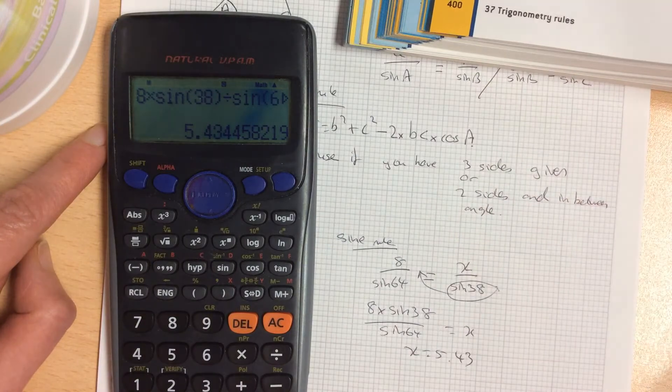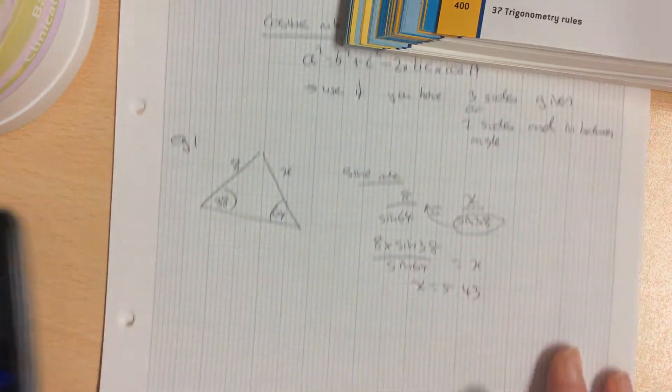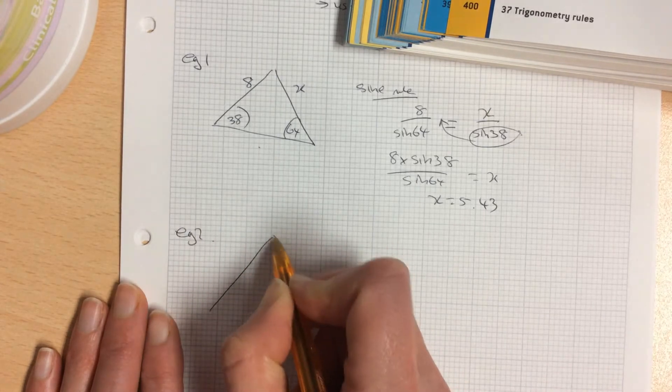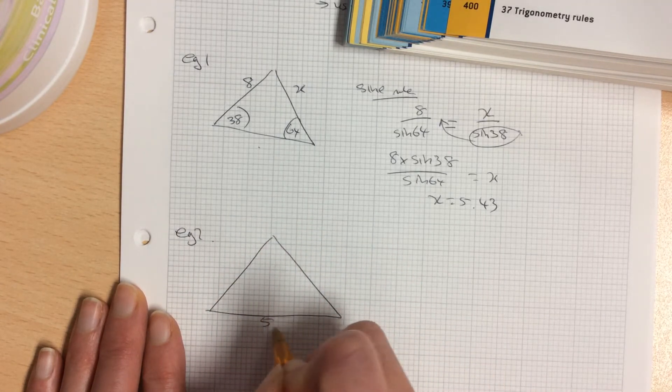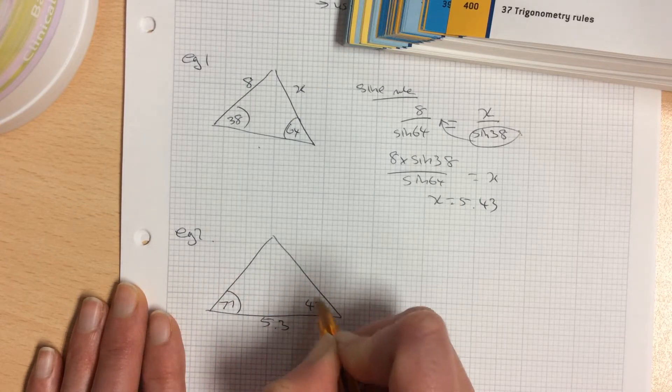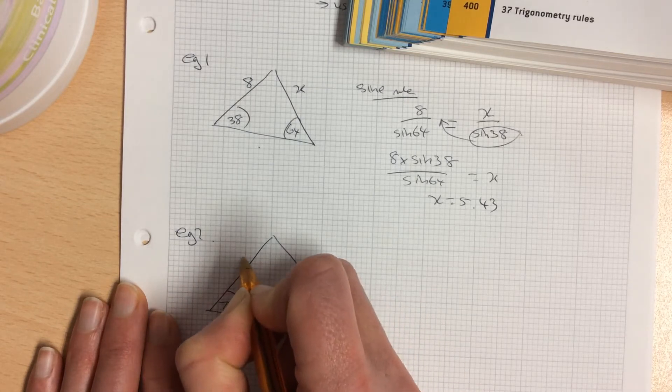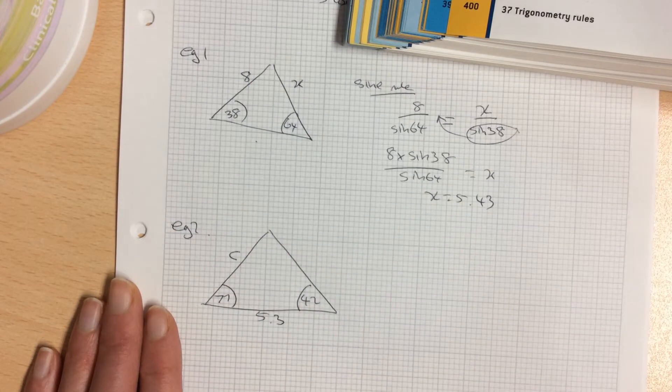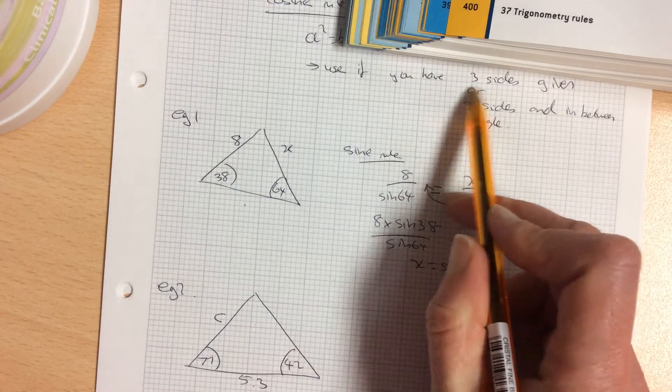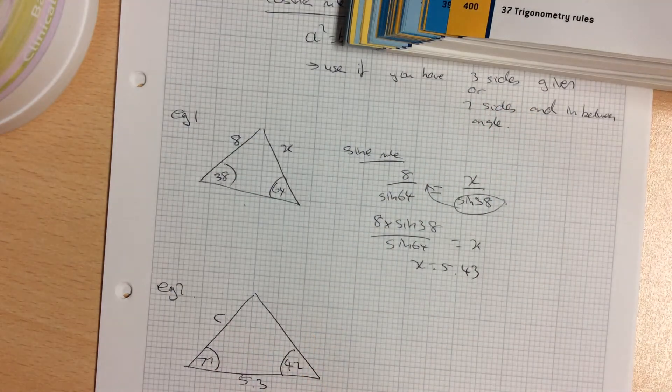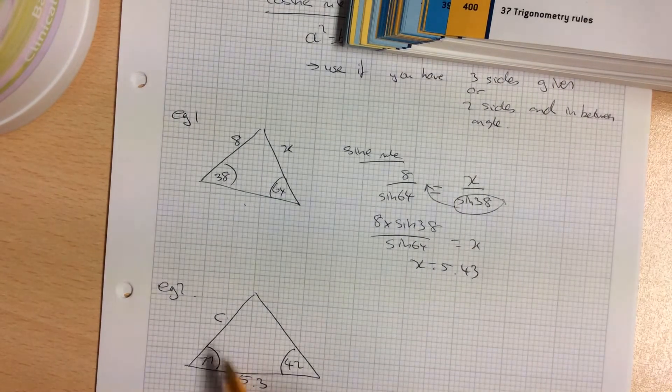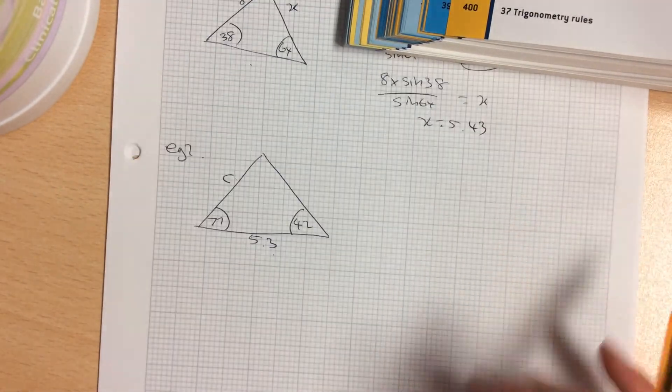Now we'll try another one. Example 2: you've got this triangle with 5.3, 77, 42, and I'm looking for this side here. Check for cosine rule. Are you given three sides? No. Are you given the two sides and the angle in-between? No. So it's going to be sine rule.